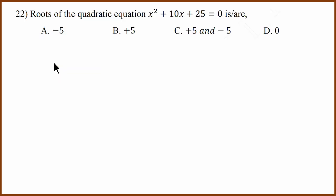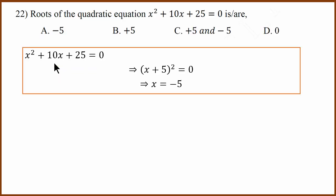Twenty-second question: find the roots. This is (x plus 5) whole squared equals 0, which gives x plus 5 equals 0, meaning x equals minus 5. The answer is A.